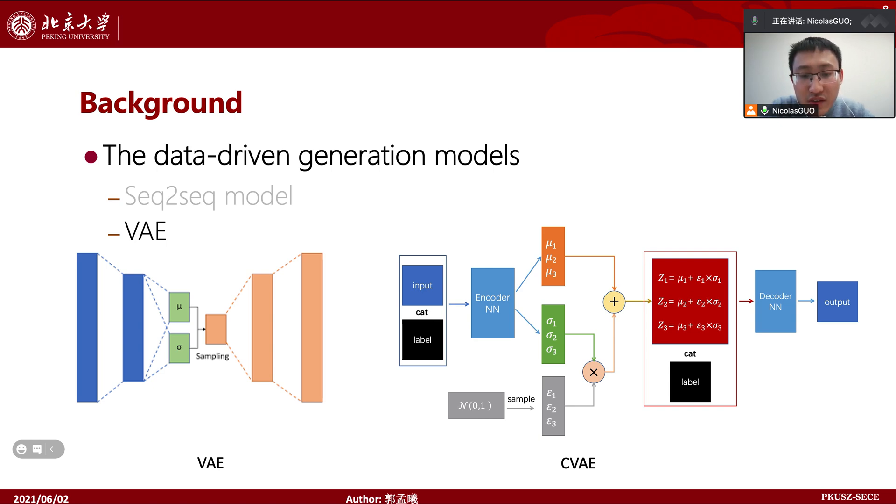Specifically, the CVAE model consists of an encoder and a decoder. The encoder maps the input to a latent space, and then we sample this space to get a latent vector. The decoder decodes this vector into the final layout.